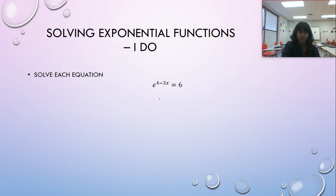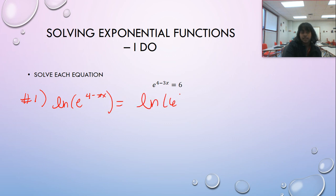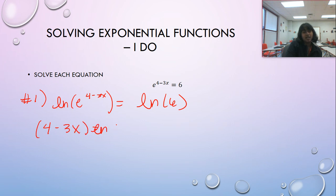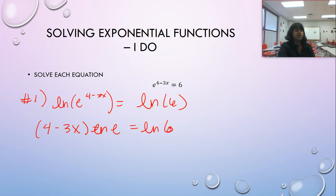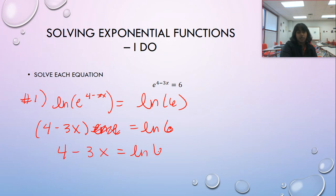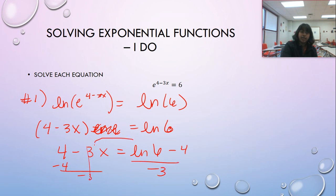This question looks scary but take the natural log of both sides. On the e side, bring the power function forward: (4 minus 3x) times ln(e) equals ln(6). Since ln(e) equals 1, this becomes 4 minus 3x equals ln(6). Subtract 4 from both sides and divide by negative 3 to get x equals (ln(6) minus 4) divided by negative 3, which can be rewritten as (4 minus ln(6)) divided by 3.